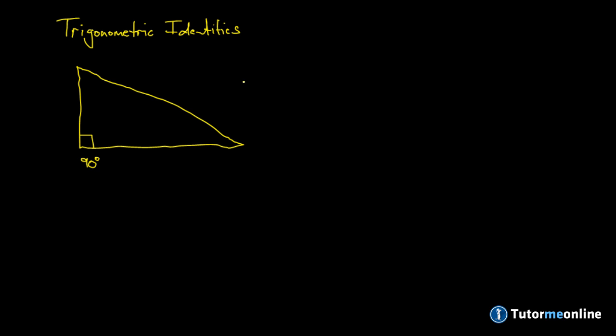In the previous video we had a look at the ratios between the sides of similar triangles. Trig identities are the ratios of two of the sides in relation to one of the unknown angles. We'll call one of the unknown angles theta.